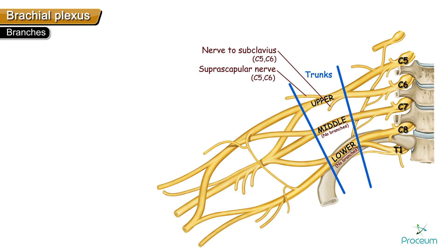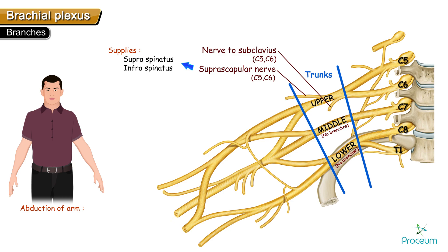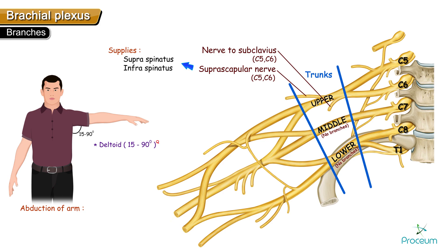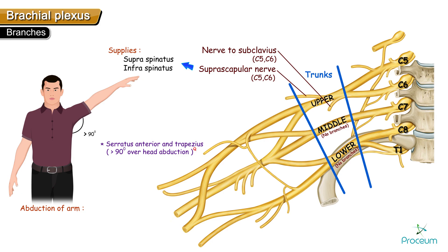The suprascapular nerve supplies both the supraspinatus and infraspinatus muscles. Supraspinatus is important in the initiation of abduction: 0 to 15 degrees of abduction is by supraspinatus, 15 to 90 degrees is by deltoid, and overhead abduction above 90 degrees is by serratus anterior as well as trapezius. Remember: initiation of abduction (0–15°) is supraspinatus, up to horizontal (15–90°) is deltoid, and above 90° is serratus anterior and trapezius.